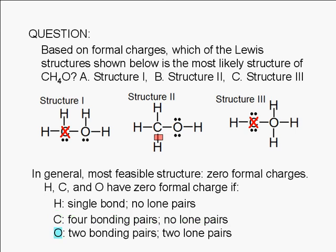How about oxygen? An oxygen atom has a zero formal charge if it has two bonding pairs and two lone pairs. Again, we can see that this is the case in structure 2, but not in structures 1 and 3.